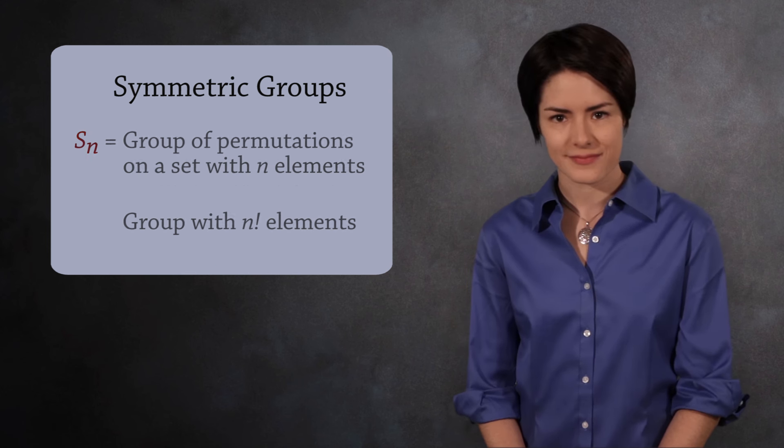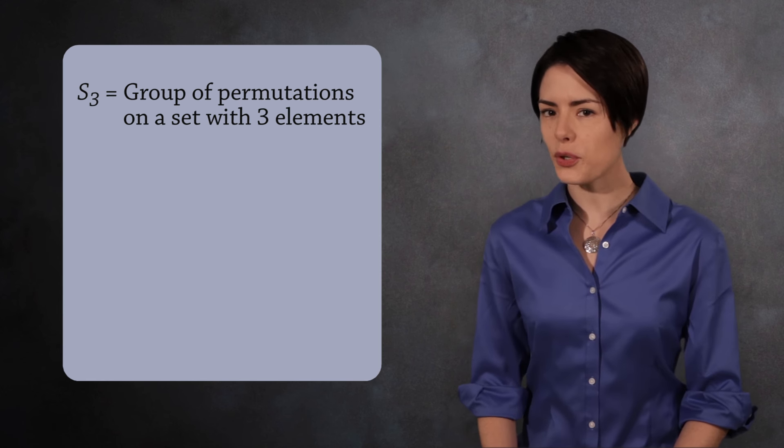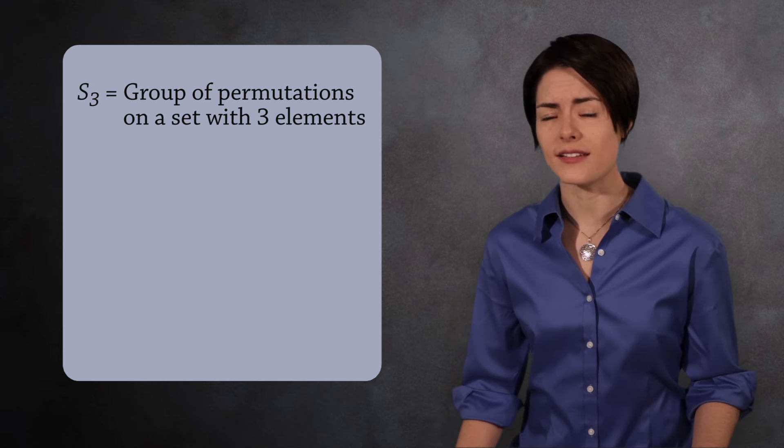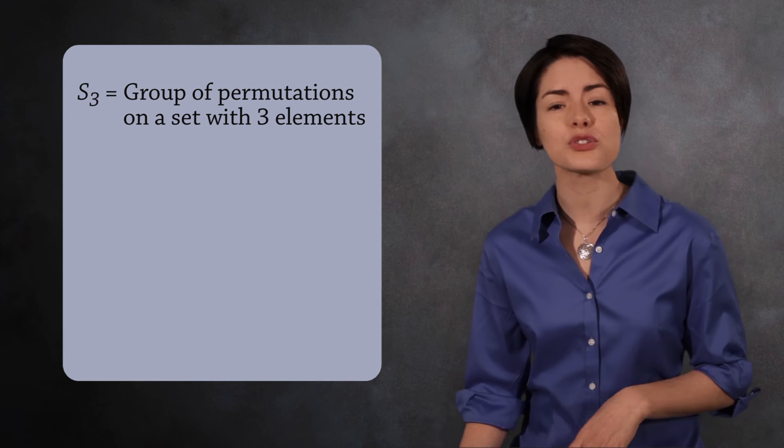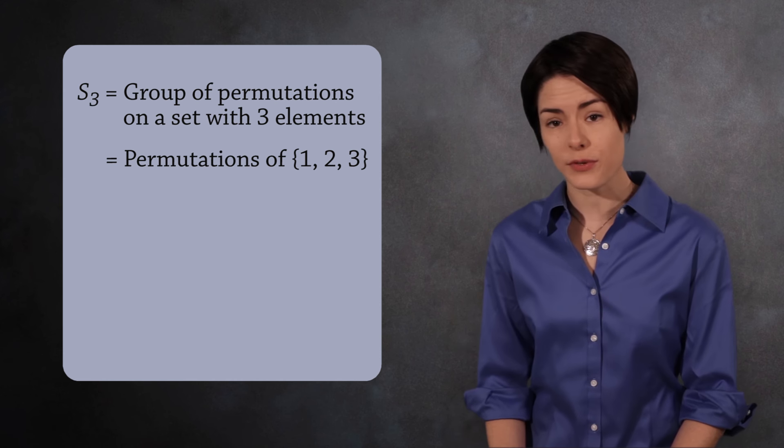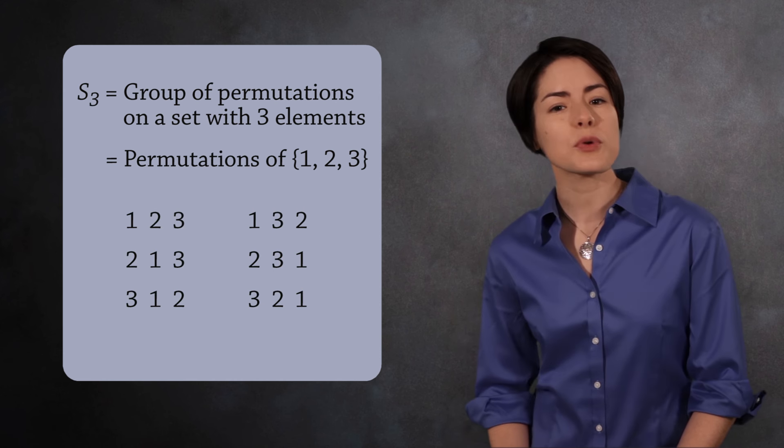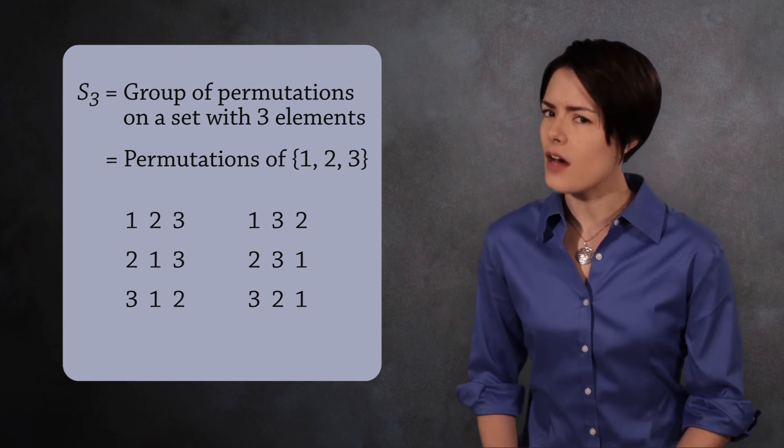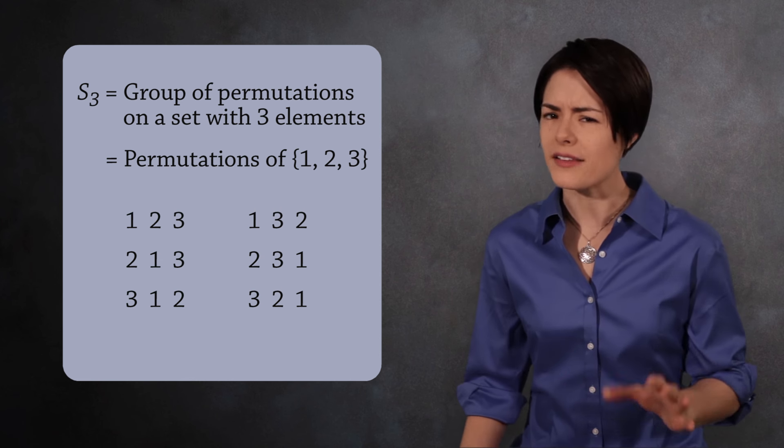Let's see some examples. S3 is a group of permutations on a set with three elements. While you can use any set, to keep things simple we'll use the integers 1, 2, and 3. There are three factorial ways to permute this set. These six permutations are the elements of the group S3. But what is the operation? How do you combine two permutations?